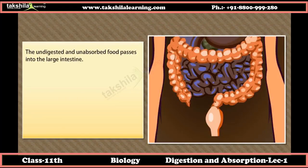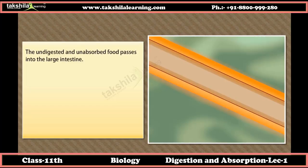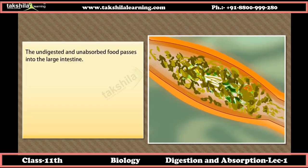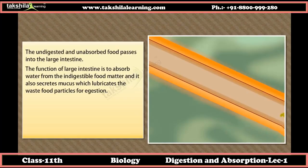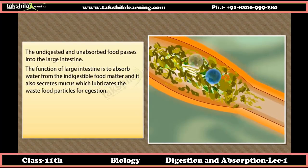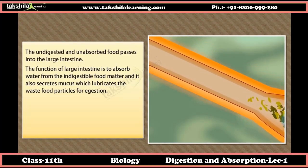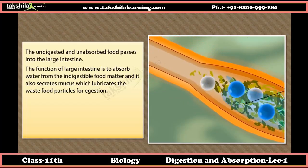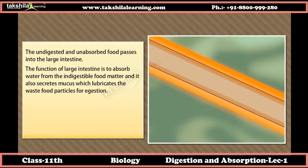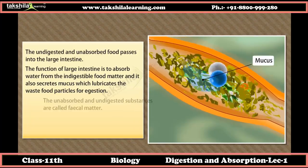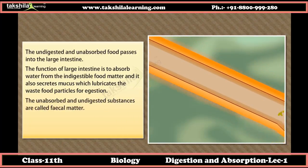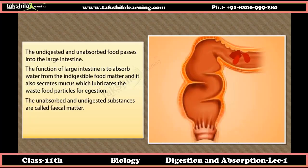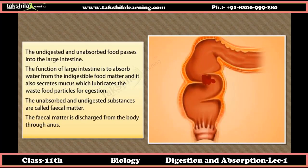The undigested and unabsorbed food passes into the large intestine. The large intestine absorbs water from the indigestible food matter and secretes mucus to lubricate the waste food particles for ejection. The unabsorbed and undigested substances are called faecal matter, which is discharged from the body through the anus.